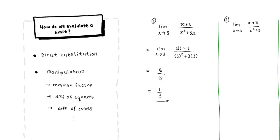For the next example, we have the limit as x tends to 3 of (x+3) divided by (x²+3). The first thing we do is direct substitution. If you substitute 3 into the denominator, you get 3 squared plus 3, which is 9 plus 3 — that is not close to zero. So we evaluate: (3+3) divided by (3²+3) equals 6 divided by 12, which simplifies to one-half. So the limit as x tends to 3 of (x+3)/(x²+3) equals one-half.